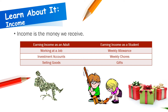Children might also have chores that they get paid for. Maybe you take the dog for a walk or take the trash out every week. Sometimes parents or guardians will pay the younger child to do a job around the house — that's called a chore. Lastly, you might earn income as a gift. Maybe for a special birthday, a life event, or even a holiday, you will be gifted money. Anytime we receive that money, we're talking about income.